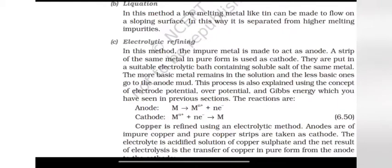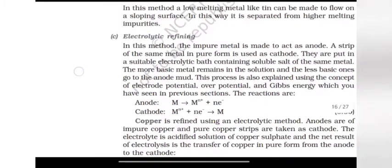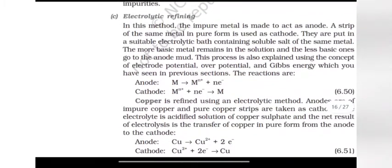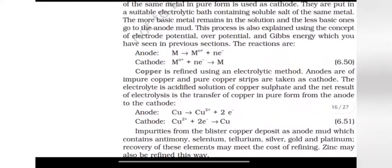Electrolytic refining. In this method, the impure metal is made to act as anode. A strip of the same metal in pure form is used as cathode. They are put in a suitable electrolytic bath containing soluble salt of the same metal. The more basic metal remains in the solution and the less basic ones go to the anode mud. This process is also explained using the concept of electrode potential, over potential and Gibbs energy, which you have seen in previous sections. The reactions are: anode M gives Mn+ plus n electron. Cathode Mn+ plus n electron gives M.